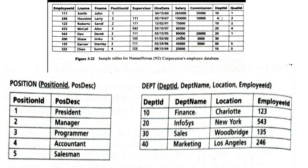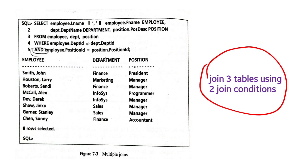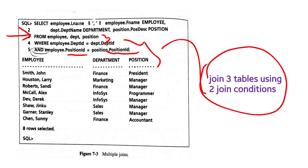For another example, we take the employee database with three tables: the employee table, position table, and department table. To join these three tables, we use two join conditions — because three tables require three minus one, which is two join conditions. The result retrieved is eight rows.